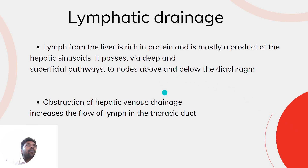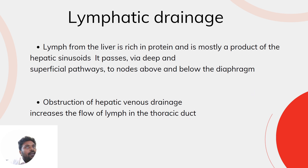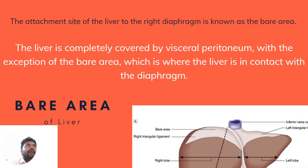Regarding lymphatic drainage: the lymph from the liver is rich in protein and is mostly a product of the hepatic sinusoids. It passes via deep and superficial pathways. Obstruction of the hepatic venous drainage increases the flow of lymph in the thoracic duct.